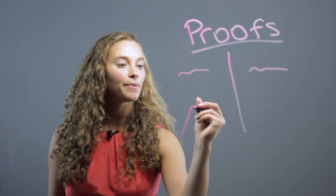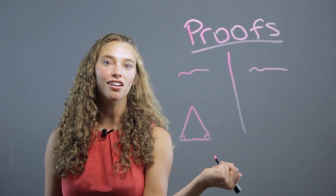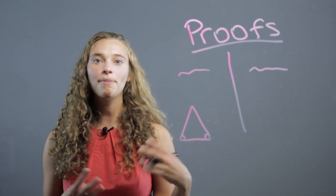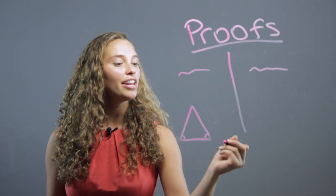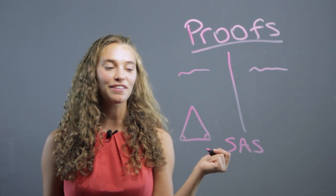For example, you could be trying to prove that two sides of a triangle are equal. We have a bunch of different theorems for that. One is called side-angle-side, or SAS is how we abbreviate it.